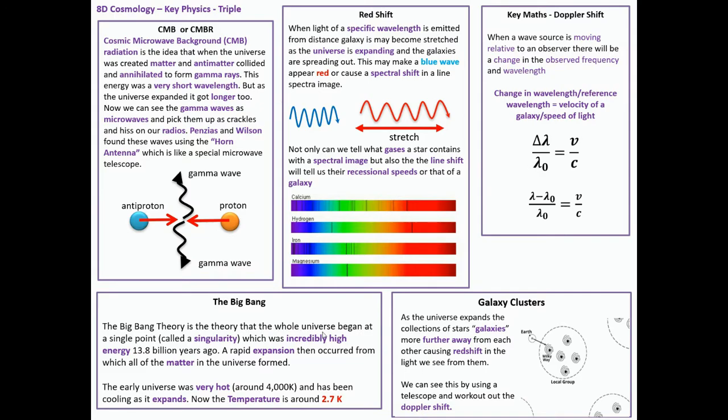And the Big Bang is really this theory that the whole of the universe began at a single point called a singularity, which was incredibly high energy, 13.8 billion years ago. Then we had a rapid expansion which occurred from which all of the matter in the universe formed. The universe was very hot, around 4,000 degrees Kelvin, which has been cooling as it expands, and now the temperature's around 2.7 Kelvin. So we've cooled down massively, we've got these microwaves, now that we're gamma, we've got redshift, all proving that this Big Bang happened and the universe expanded.